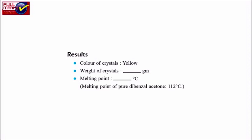Results: Color of crystals is yellow. Weight and melting point are recorded. The melting point of pure dibenzyl acetone is 112 degrees Celsius.